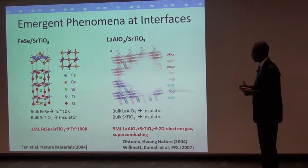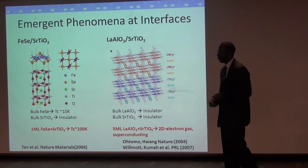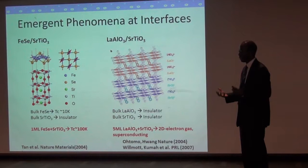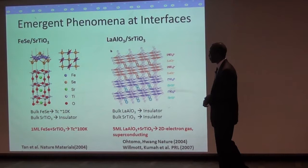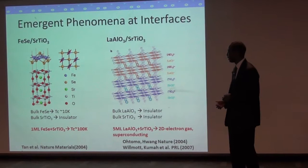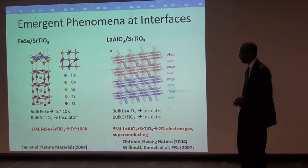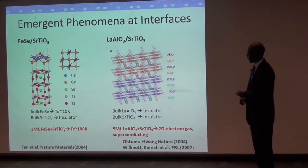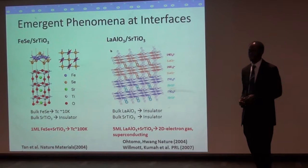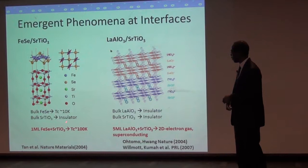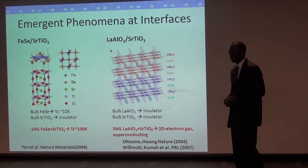There have been two important examples in the past few years of thin films grown on oxide substrates which have produced physical properties receiving a lot of attention. One case is iron selenide grown on strontium titanate. Iron selenide in bulk is superconducting below 10 Kelvin, but when you grow it on a bulk insulating strontium titanate substrate, people discovered that you can get this interface forming a superconductor with a TC very close to 100 Kelvin. It's important we understand how the bonding at this interface occurs to explain why we have this enhancement in TC.